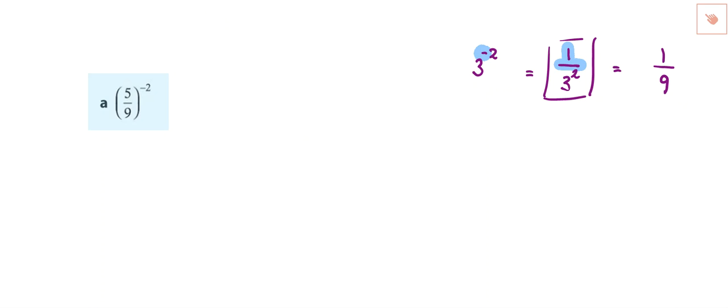So the question then is how do we apply that to a question like this when we've got a fraction already in brackets and there is a negative exponent? So if it's 5 over 9 with the negative 2, the negative we could think of it. This is why those shortcut thinkings are not always the best.